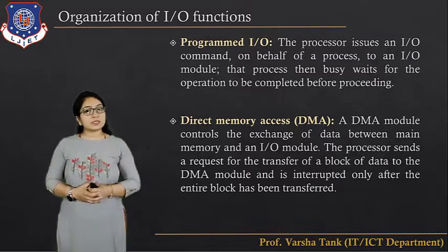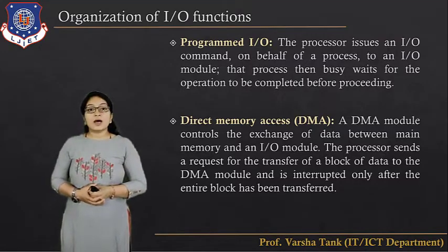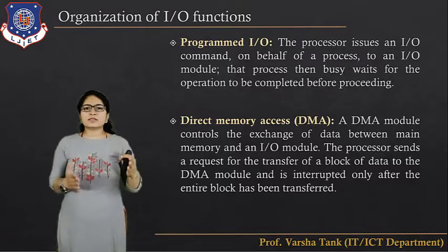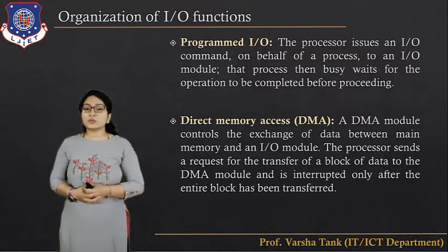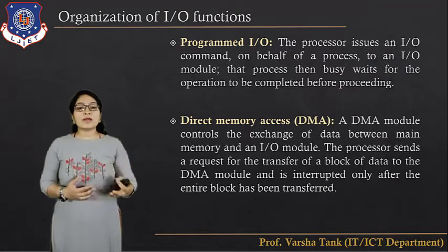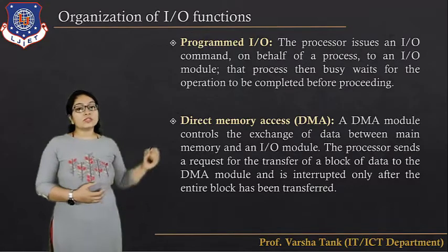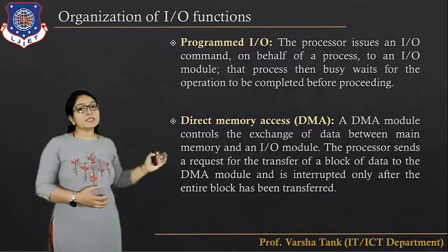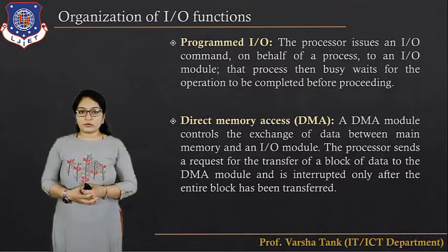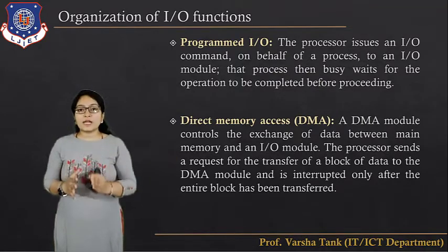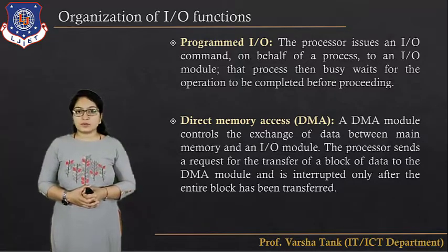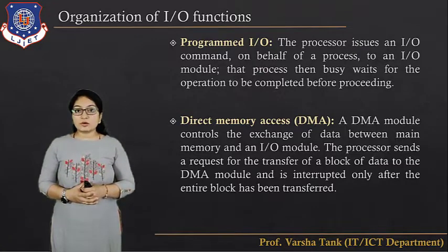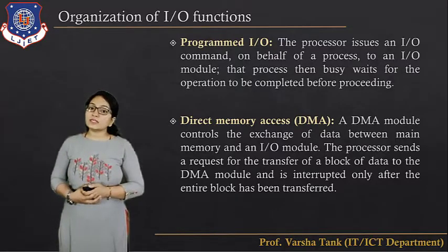Next is DMA — Direct Memory Access. A DMA module controls the exchange of data between main memory and the I/O module, whether secondary storage or other input/output devices. The processor sends a request for the transfer of a block of data to the DMA module, and is interrupted only after the entire block has been transferred.